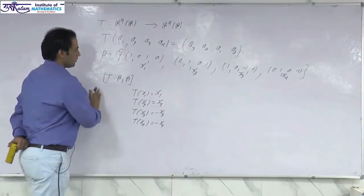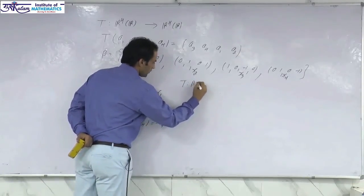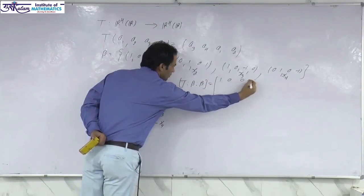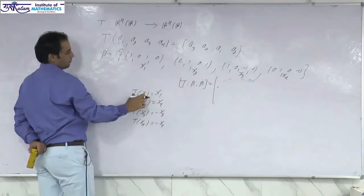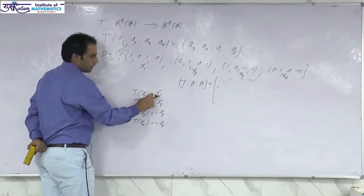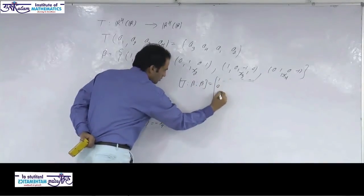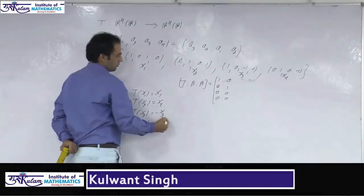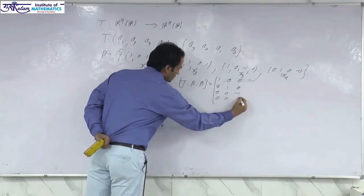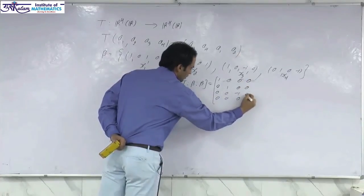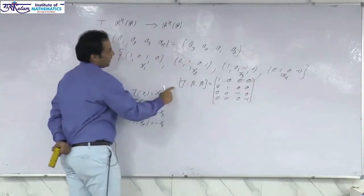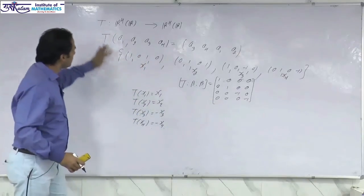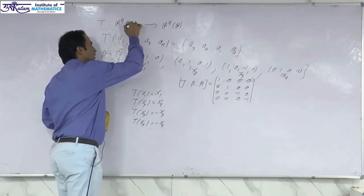So the matrix representation of T with respect to the ordered basis beta is a diagonal matrix. The image of x₁ is x₁, giving column (1, 0, 0, 0). The image of x₂ is x₂, giving column (0, 1, 0, 0). The image of x₃ is -x₃, giving column (0, 0, -1, 0). The image of x₄ is -x₄, giving column (0, 0, 0, -1). Hence the matrix representation with respect to this ordered basis is the diagonal matrix diag(1, 1, -1, -1).